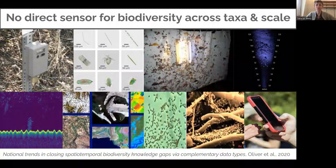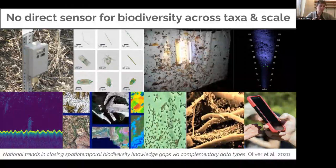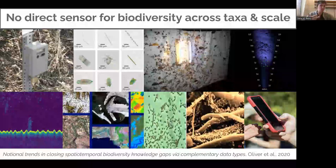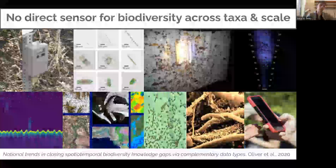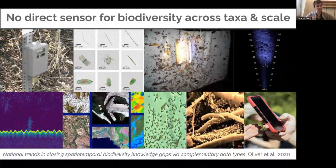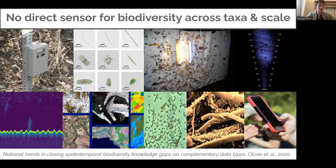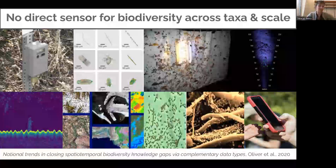Because these are proxy sensors, the data needs to be processed before we can extract the information we really want. We don't want RGB pixels of a scene — we want information about which species were there, how many, at what times and places, their health, and their behavior. All of those things take additional processing.